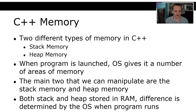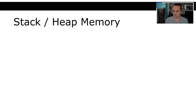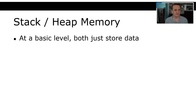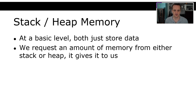Both the stack and the heap are stored in RAM, and the difference is determined by the operating system when the program runs. The OS says: this part of memory is available for the stack, and this part is available for the heap. At a basic level, they both just store data — we request an amount of memory from either the stack or the heap and the program gives it to us.